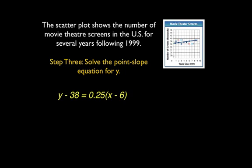The first thing we're going to do in our order of operations is get rid of the parentheses. So we're going to multiply 0.25 by x and then multiply 0.25 by negative 6. And so we end up with y minus 38 is equal to 0.25x minus 1.5.